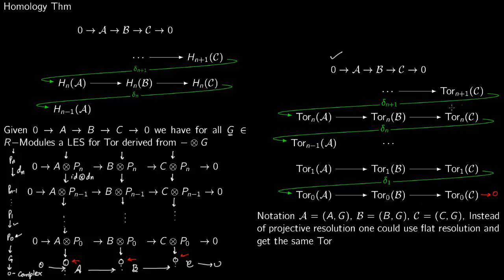You get Torₙ₊₁, Torₙ, Torₙ₋₁, and so on in the long exact sequence. Instead of complex A, you write Tor(A, G); instead of complex B, you write Tor(B, G); instead of complex C, you write Tor(C, G). This is the notation found in most texts. Instead of a projective resolution, one could also use a flat resolution and get the same Tor — this is another theorem.